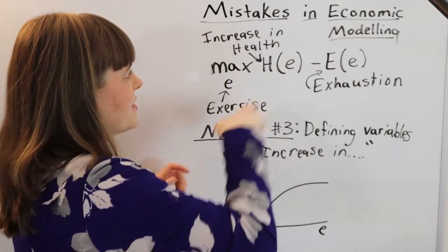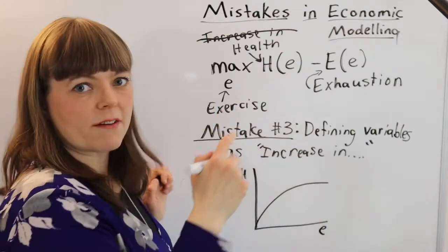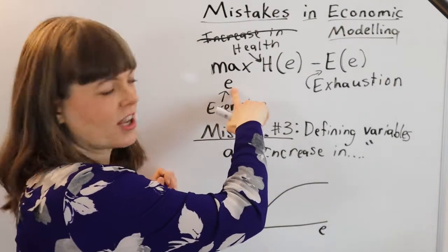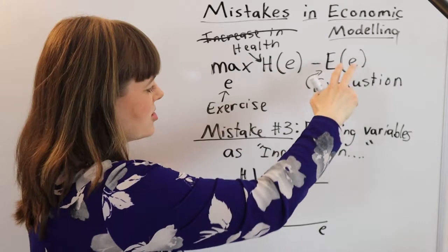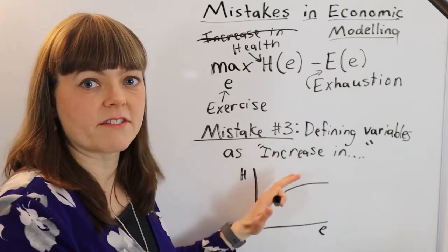Now of course the problem here is the increase in this is wrong. The appropriate way of doing this model of how much exercise should you get is maximize health minus exhaustion, because increase in health is actually the derivative of this graph.